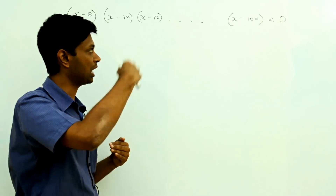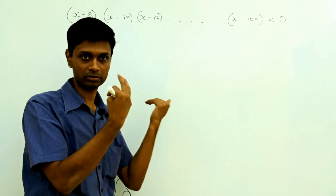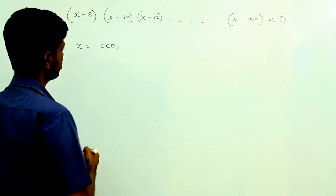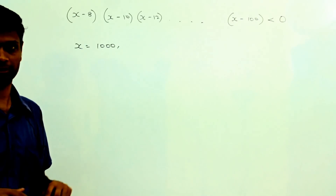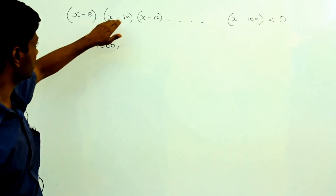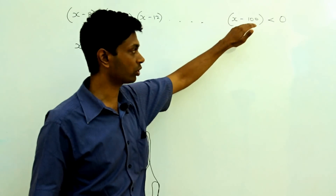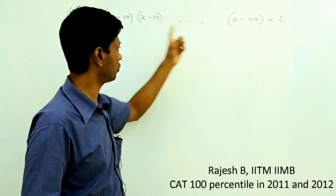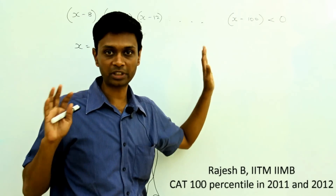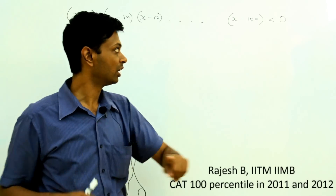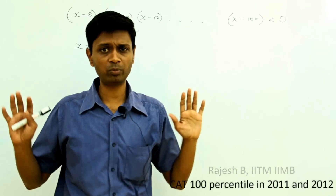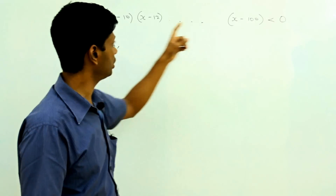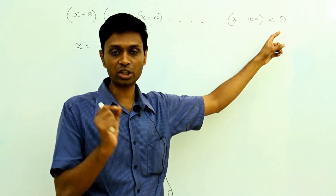I want to start by substituting large numbers to see the pattern. Let me substitute x equals 1000 — I am just plugging in a value to see if it works. When x is 1000, this gives 1000 minus 8, 1000 minus 10, 1000 minus 12, all the way till 1000 minus 100 — all of these numbers are positive. The product of a bunch of positive terms will be positive. I do not have to worry about magnitude here; I am only comparing with 0, so all I care about is whether this term is positive or negative.